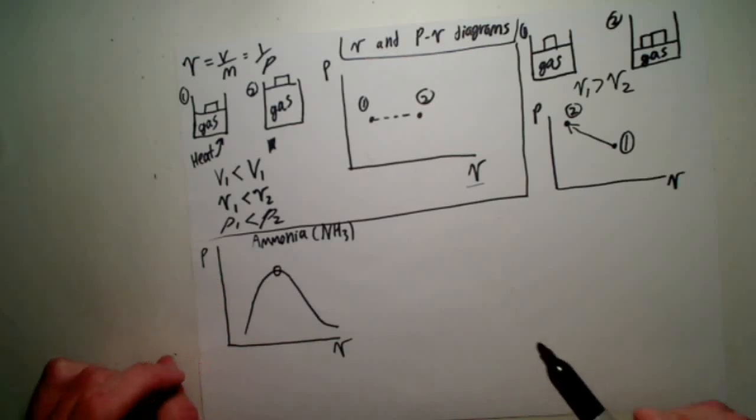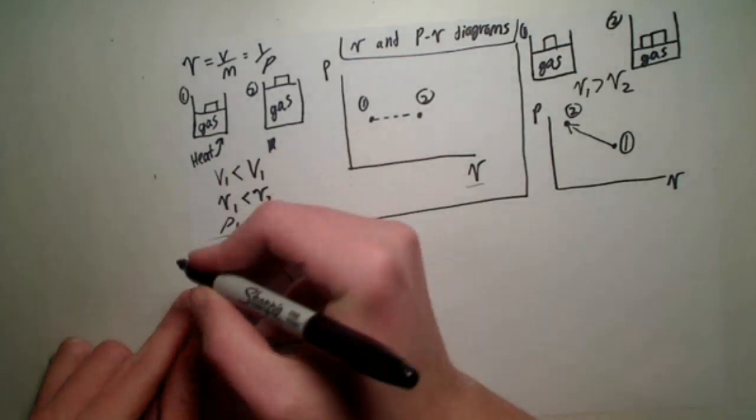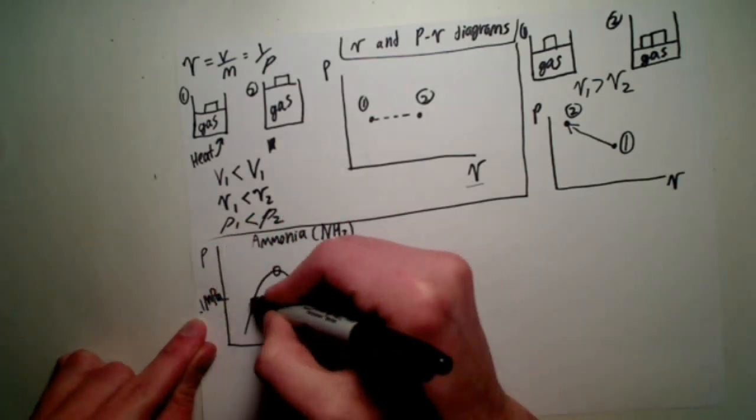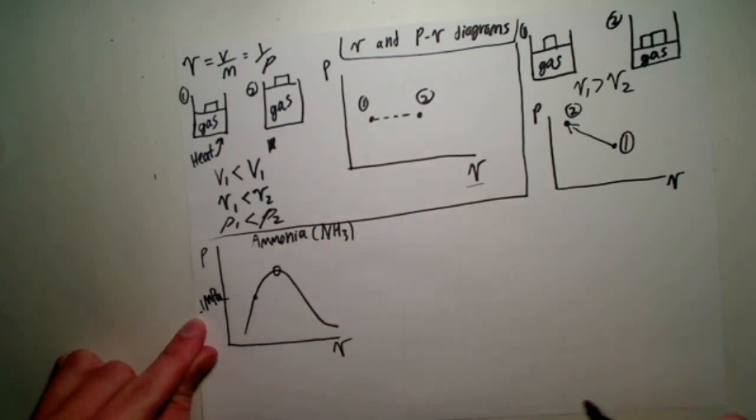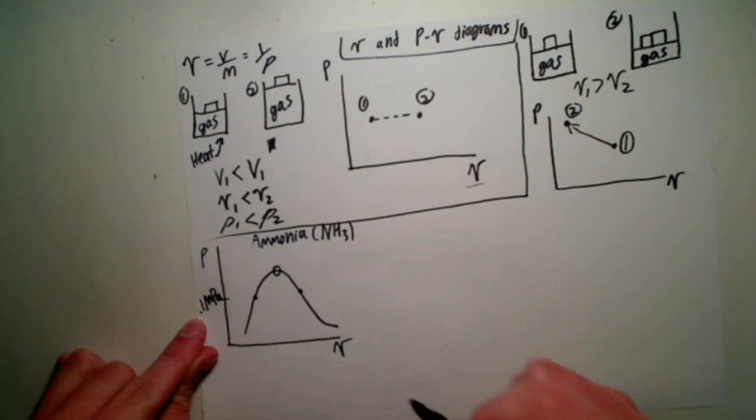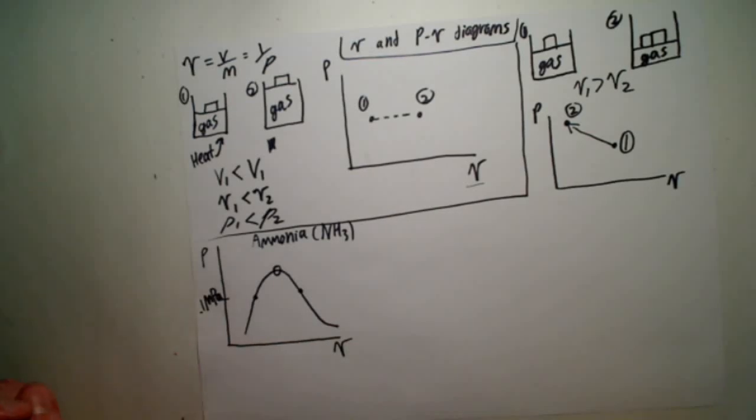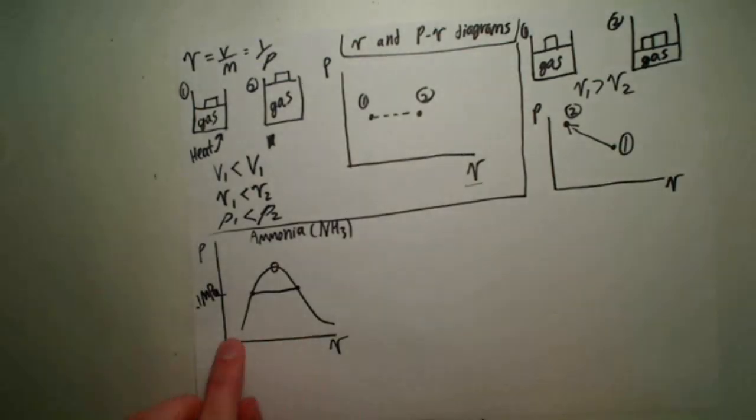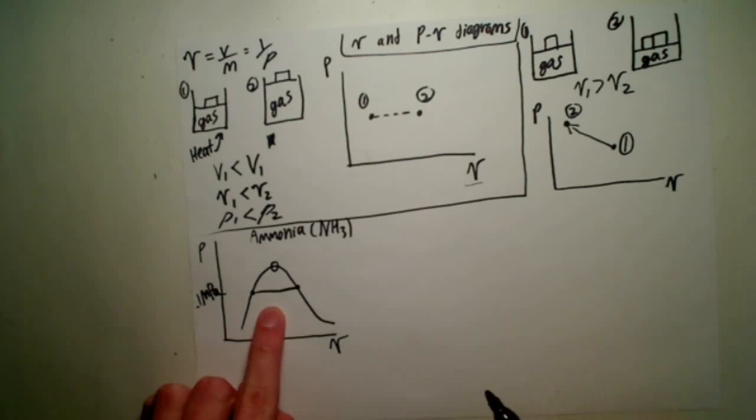So at any given pressure, let's just say this is like 0.1 megapascals, there is going to be some specific volume over here where it's a liquid, and then over here it's a gas. Now the reason why this is important is because if I were to draw a constant temperature line on this graph, let's say a constant temperature line at 1 megapascal, it's going to be horizontal. As long as we're inside this vapor dome, temperature and pressure don't change. If one stays the same, the other one stays the same along with it.